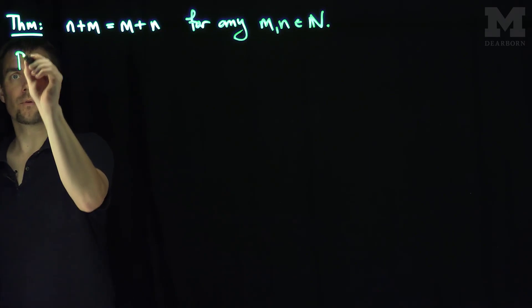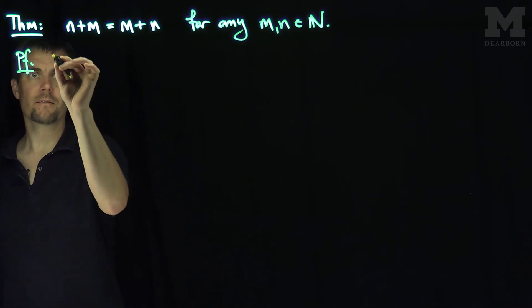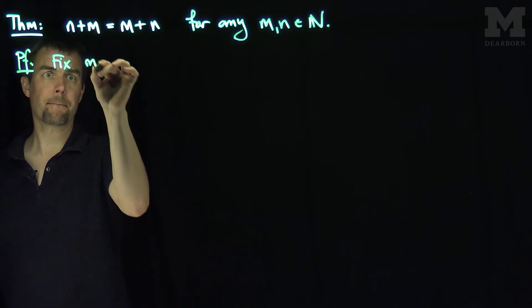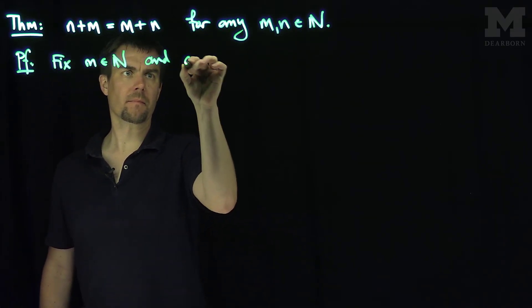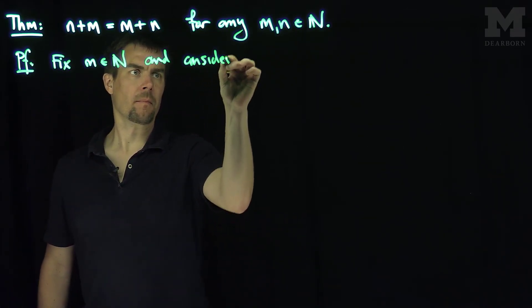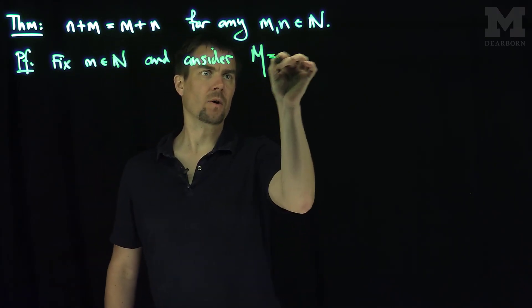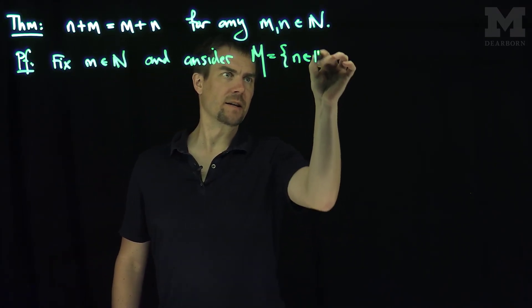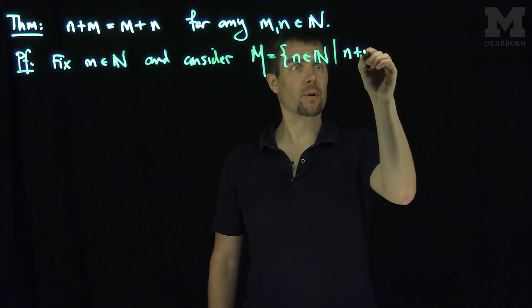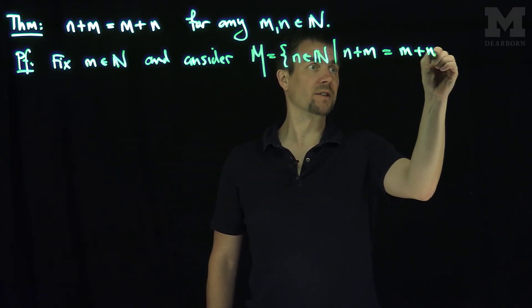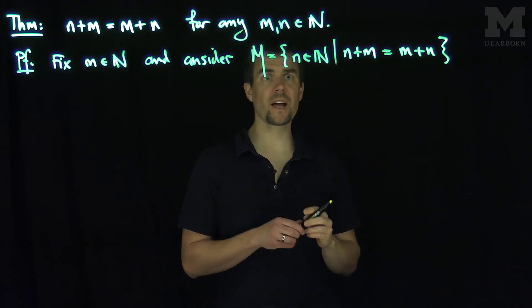So we're going to fix n. Our proof will proceed by the following route. Let's fix m and consider the set M, which is the set of all n in N such that n plus m is equal to m plus n.